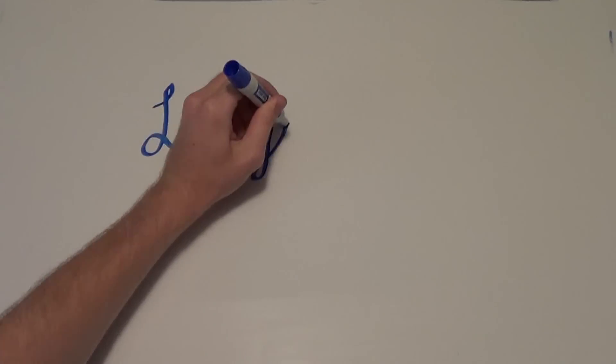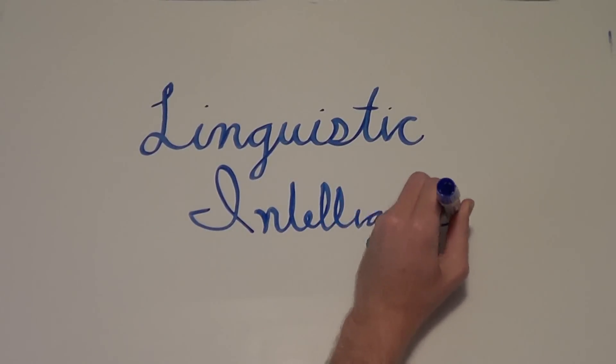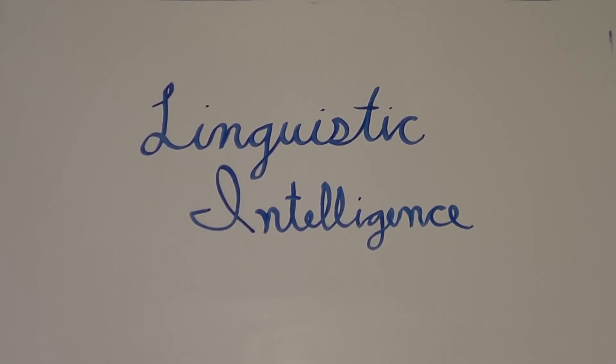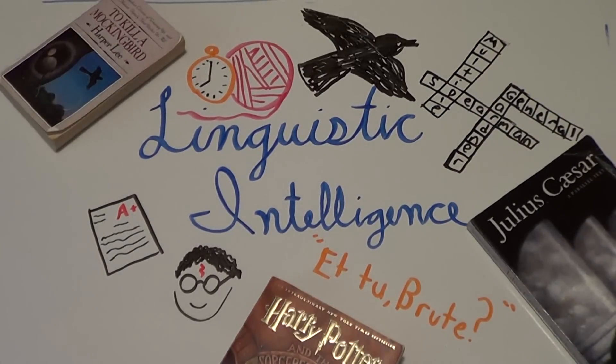The first is linguistic intelligence, or the ability to use language to express and appreciate complex meanings. Linguistic intelligence presents itself in essays, speeches, daily crossword puzzles, and through word-smart people like Harper Lee, Shakespeare, and J.K. Rowling.